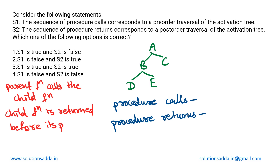This is a compiler design question. There are two statements and we have to determine which of them are true. S1 is saying that the sequence of procedure calls corresponds to a pre-order traversal of the activation tree.